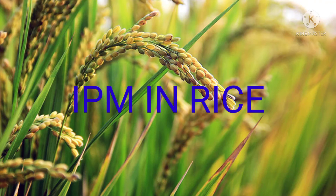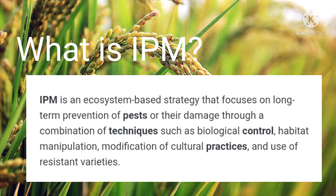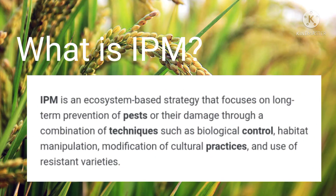IPM in rice. IPM is an ecosystem-based strategy that focuses on long-term prevention of pests or their damage through a combination of techniques such as biological control, habitat manipulation, modification of cultural practices, and use of resistant varieties.